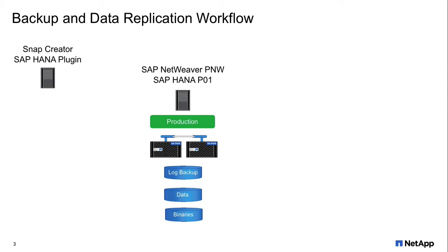For backup purposes, the most important volumes are the data files, the binaries, and an NFS share for a log backup. On a second server, we have installed Snap Creator with its HANA plugin, and Snap Creator is configured to backup the SAP HANA system.